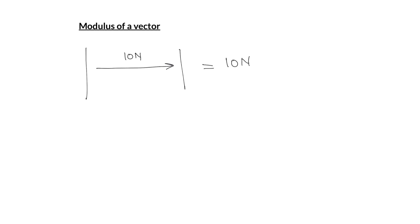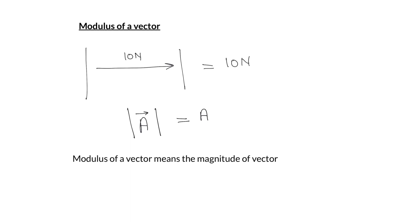In general, if we have vector A and take its modulus, we get its magnitude, which is represented by the scalar quantity a. Notes: Modulus of a vector means the magnitude of the vector.